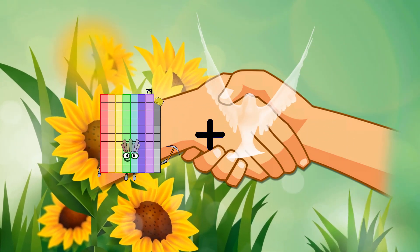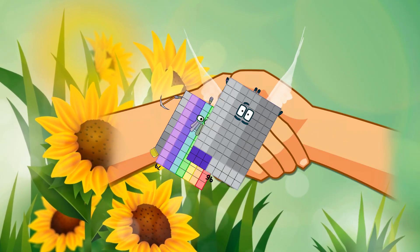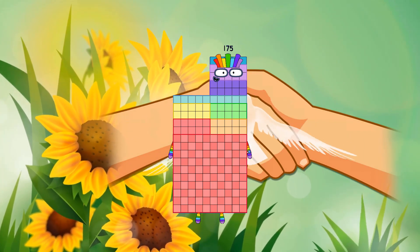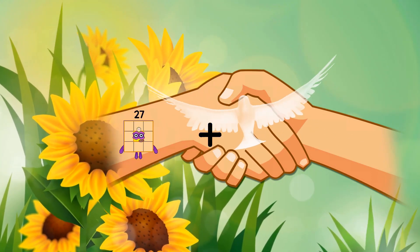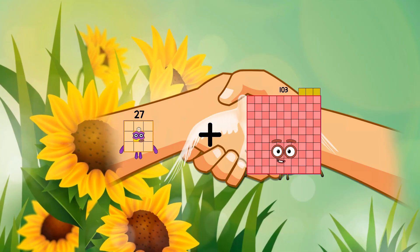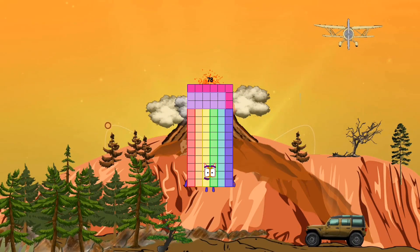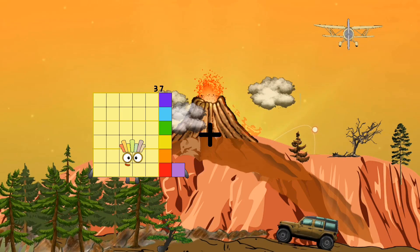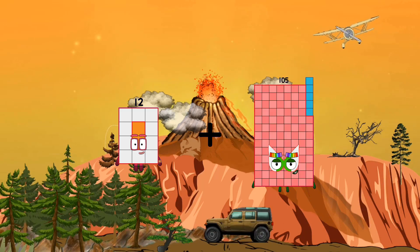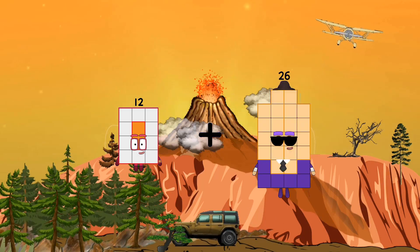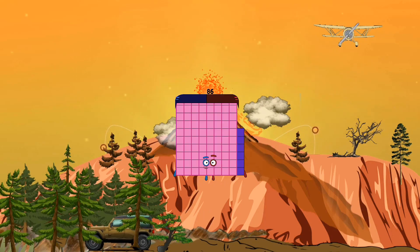79 plus 96 equals 175. 27 plus 51 equals 78. 12 plus 74 equals 86.